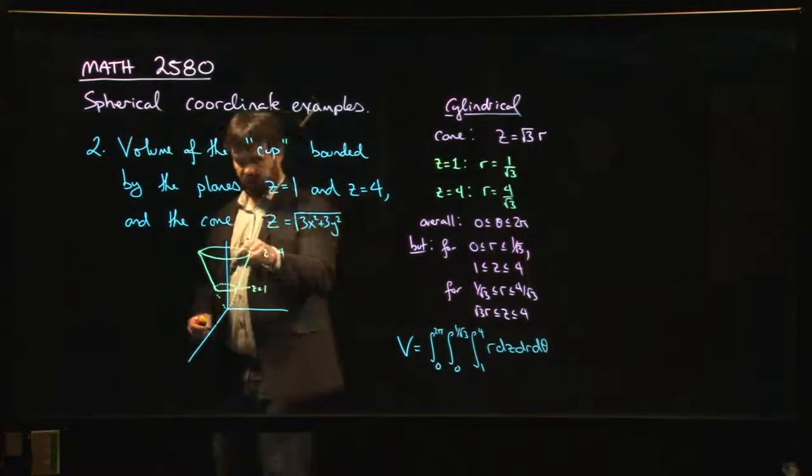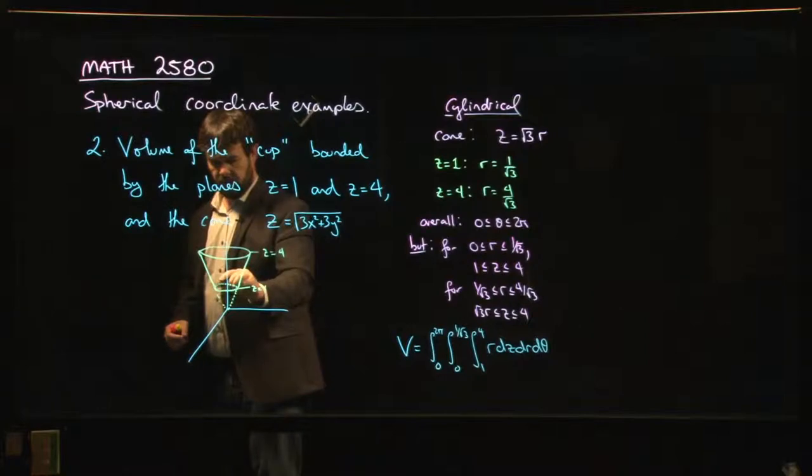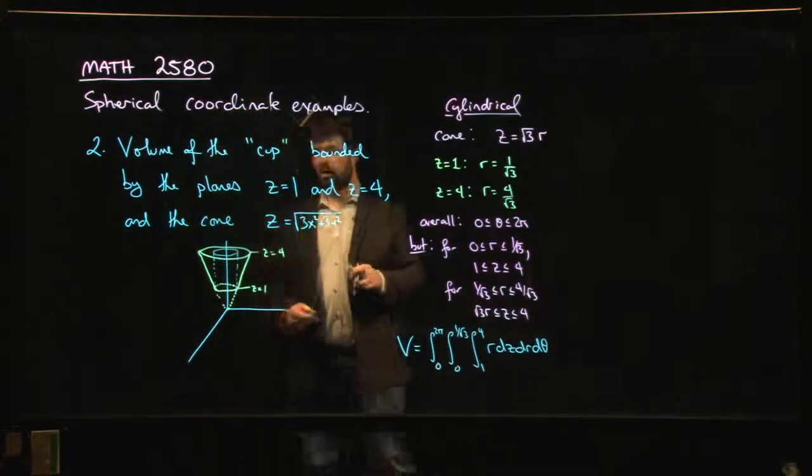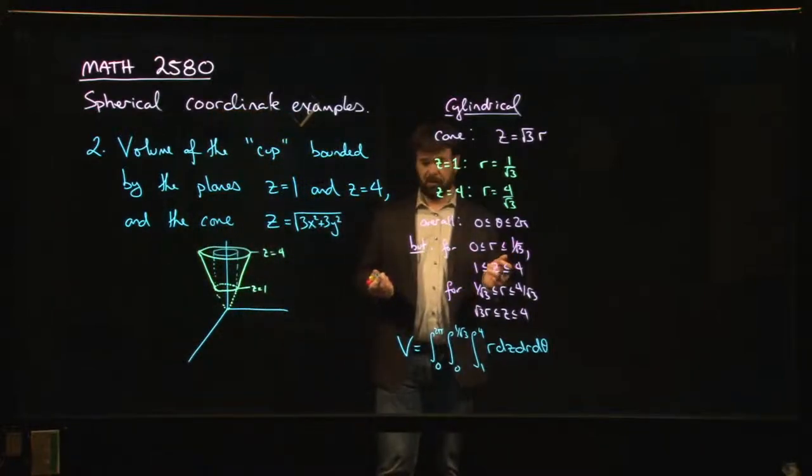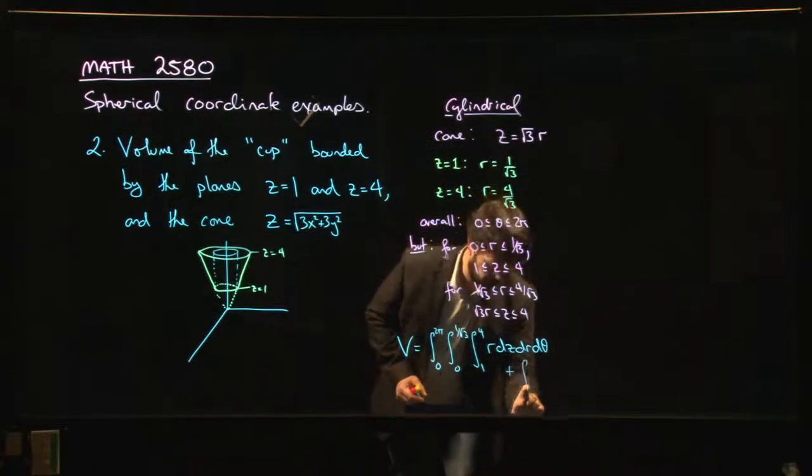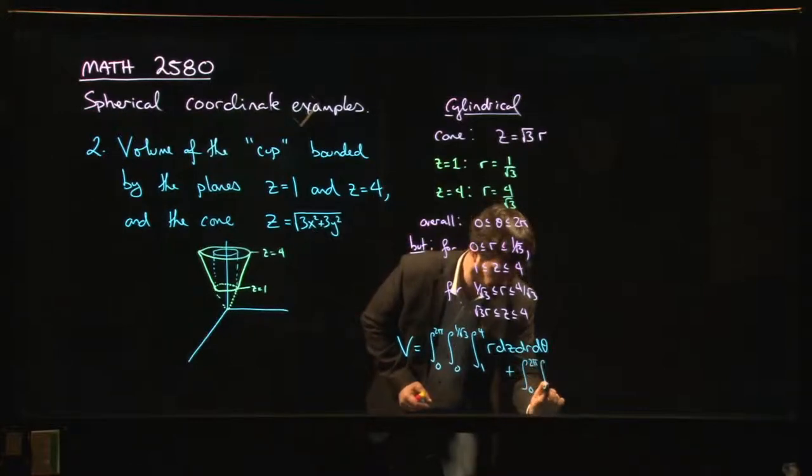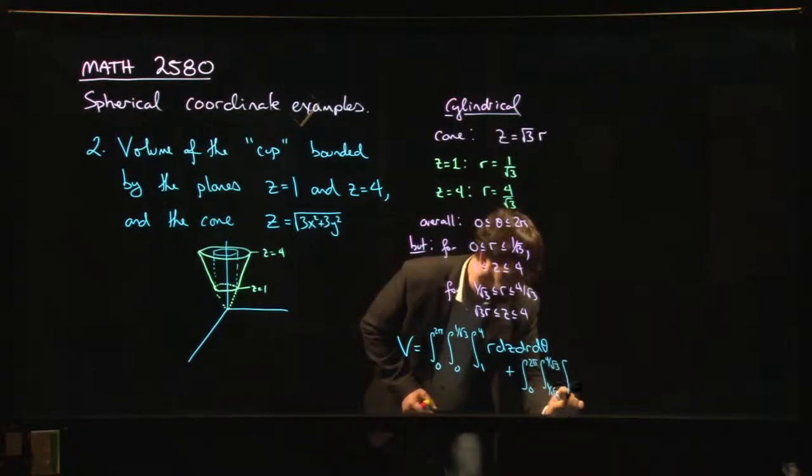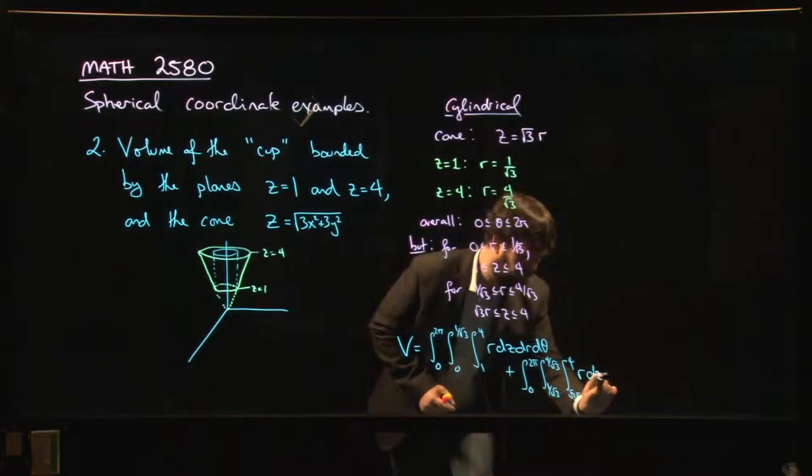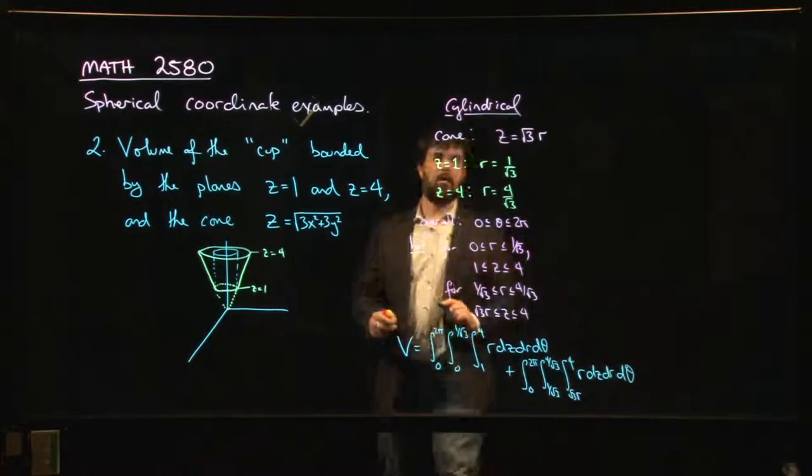But that gives you the volume of this cylinder, right? It gives you the volume of this piece inside the cup. And you still need to get the volume of the portion of the cup sitting outside that cylinder, which is why you have to add on the second integral. You have to add on the integral from zero to two pi, and from one over root three to four over root three, and then root three r to four of r dz dr d theta.